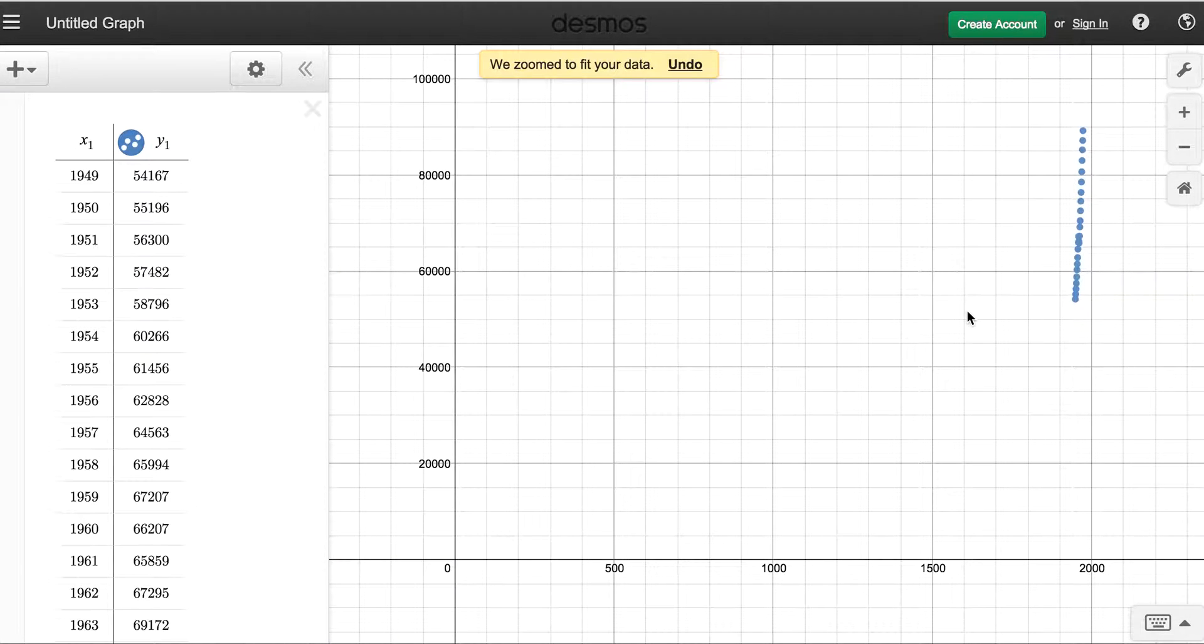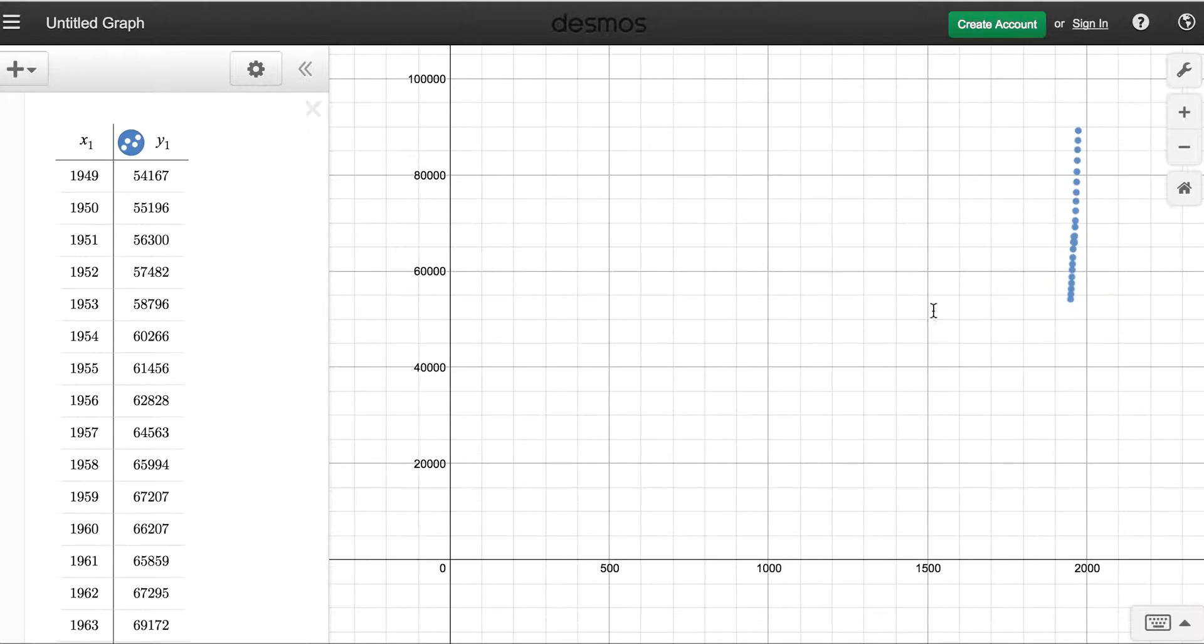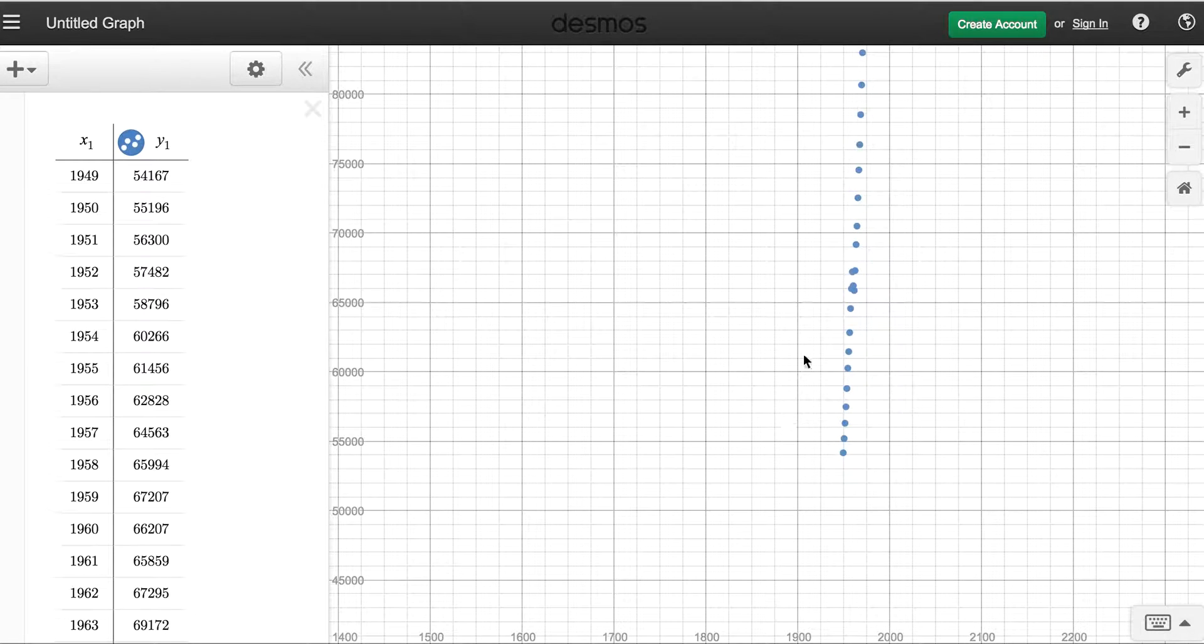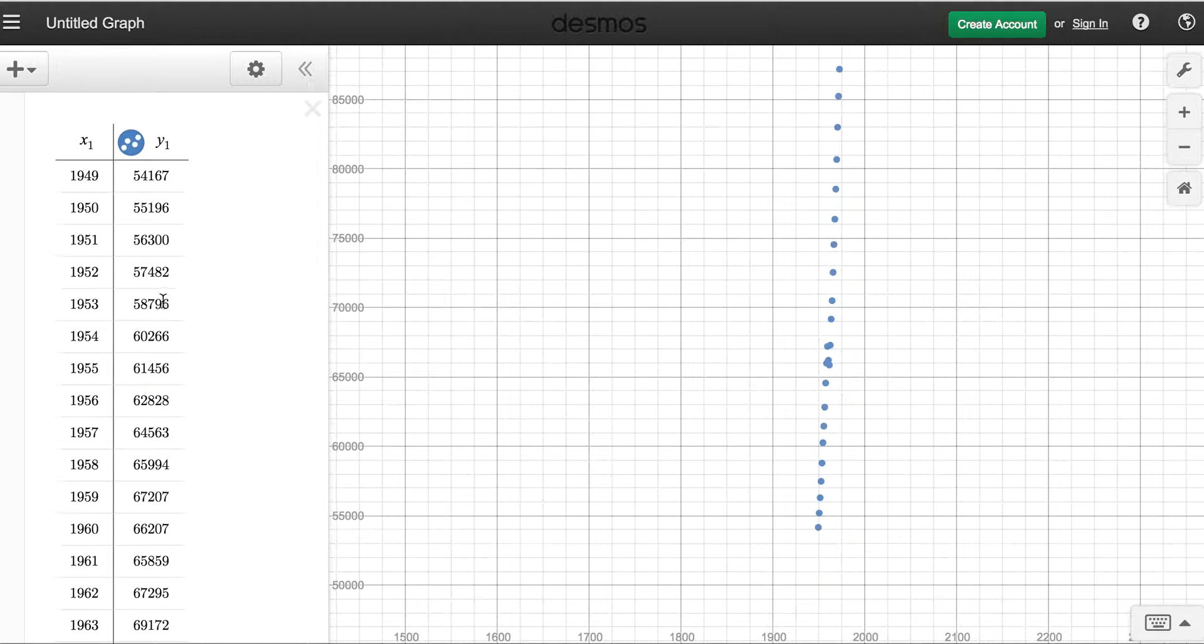Now it does this nice thing for me, it zooms for me so I can see the relationship between the x and y values, but I can also change the zoom myself if I want, scrolling in and looking at it a little more closely. Another thing you'll notice is that it defines your x as x1 and your y as y1. This is important and we're going to need to use it when we find our regression equation, so make a note of it.